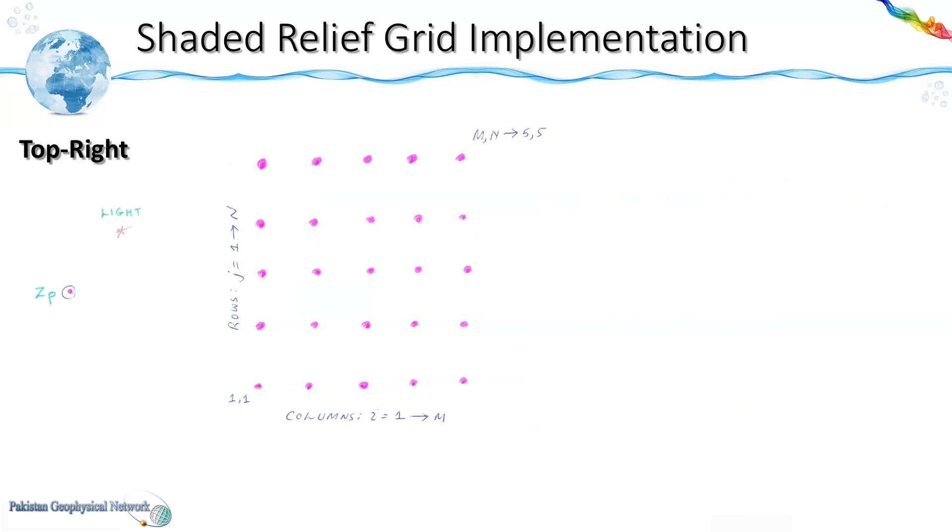Similarly if the light source is at the top right position then if this is zp and this is zr they would be represented by i,j for zp and i plus 1, j plus 1 for zr.